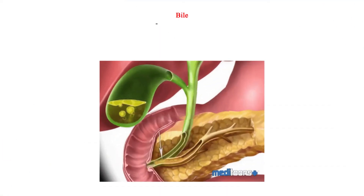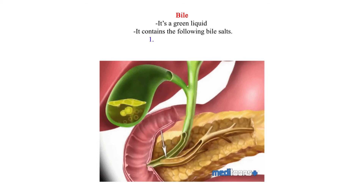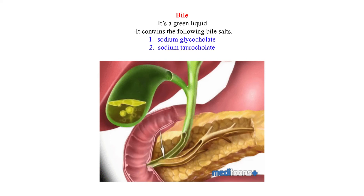Bile. It's a green liquid. It contains the following bile salts: 1. Sodium glycocholate. 2. Sodium taurocholate.